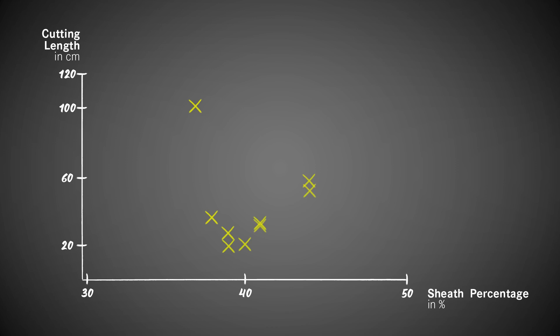Next we're going to look at the sheath percentage of a rope. The argumentation here could be: the sheath is supposed to protect the rope, so the more sheath I have, the better it should be. We look at the cut values and hold them against the sheath percentages of each rope model, and we have to once again see that there's no real correlation between the sheath percentage and the cut values. Higher values appear with lower sheath percentages, and lower values with higher sheath percentages. Different values appear for the same sheath percentages. Not a good parameter either.